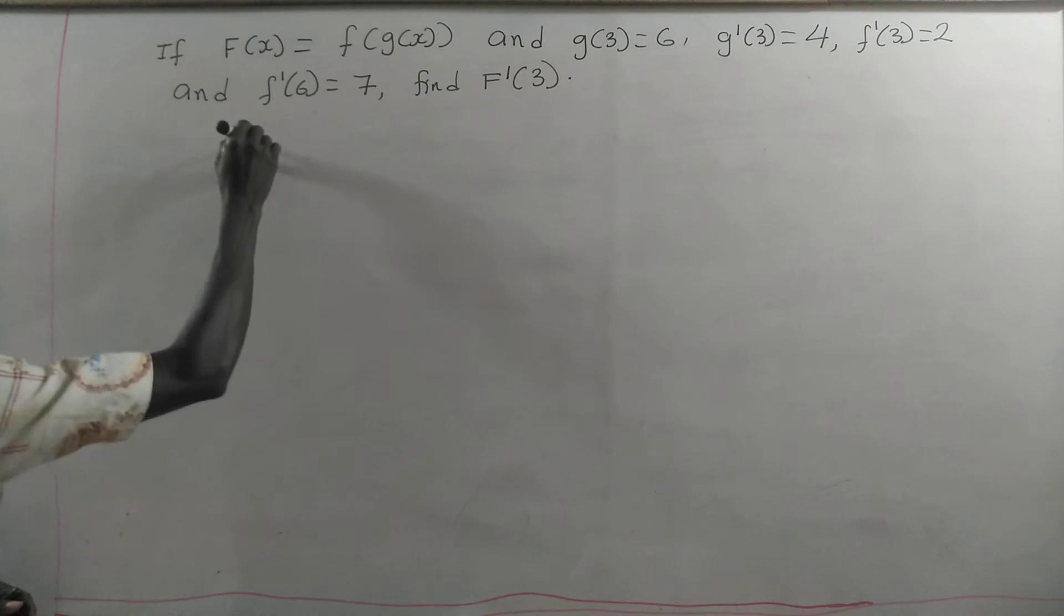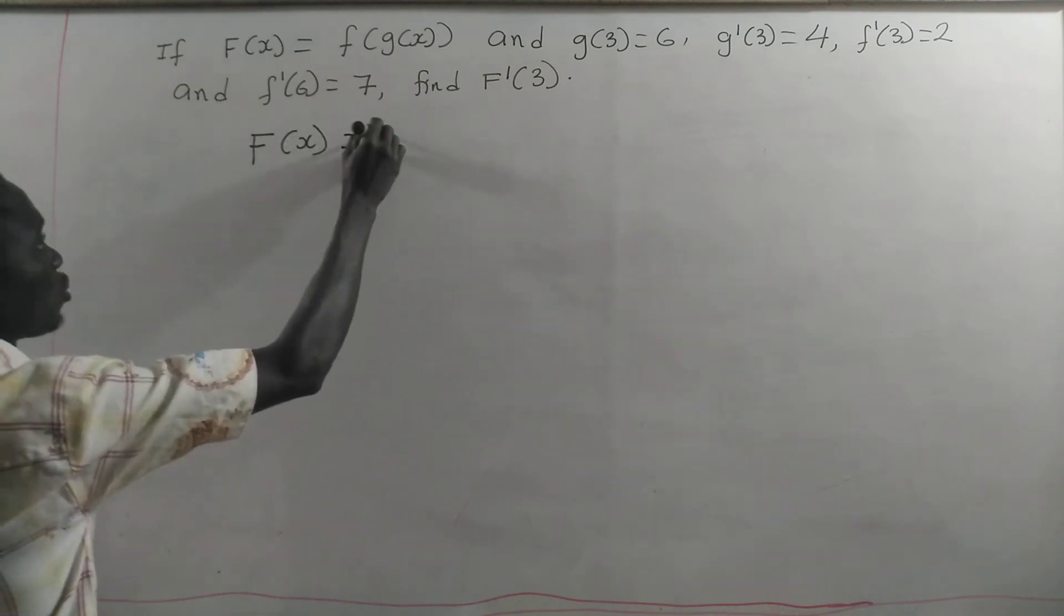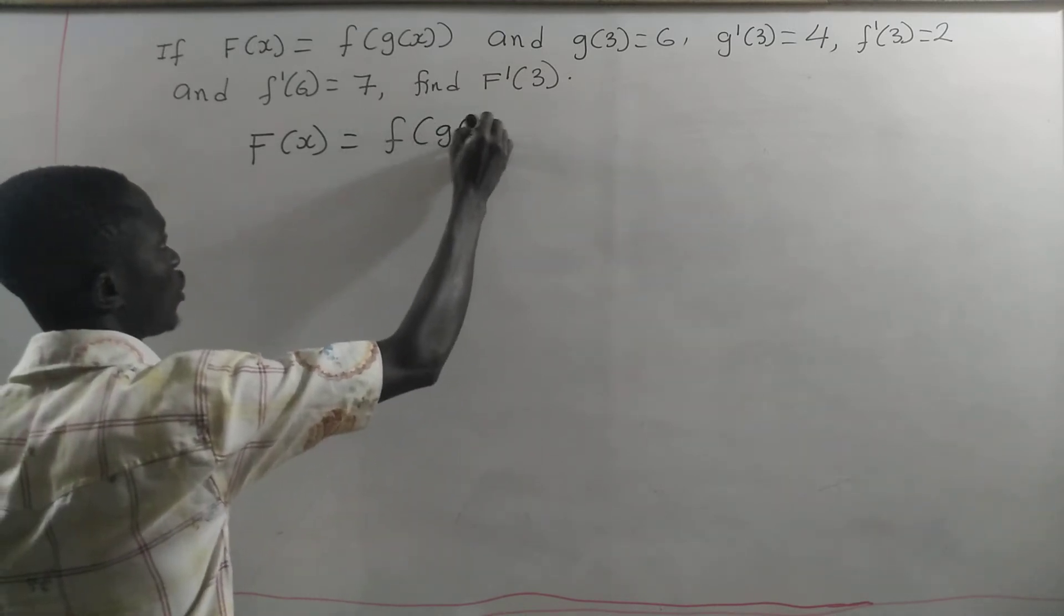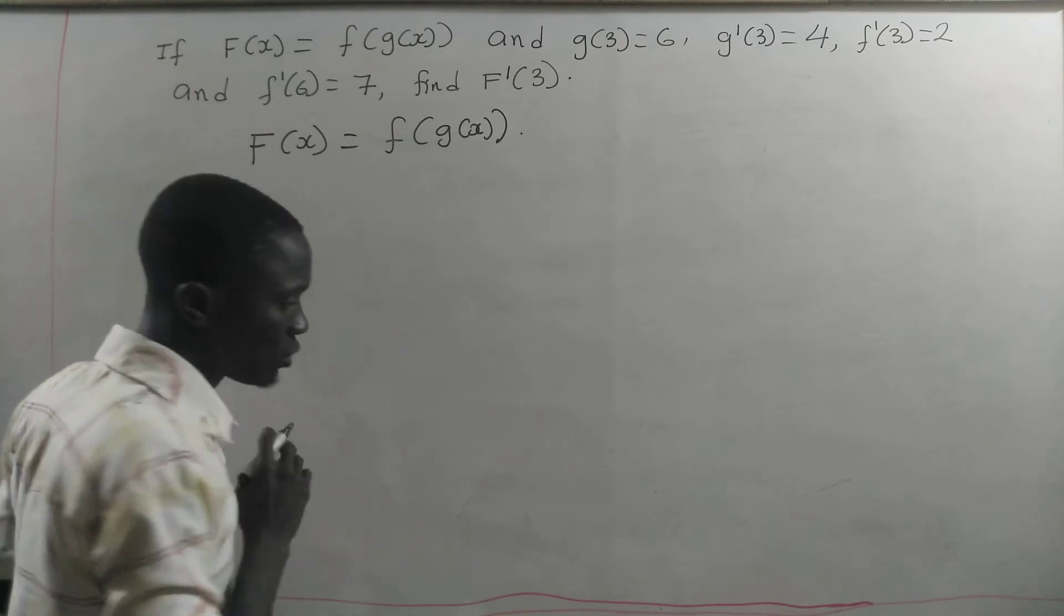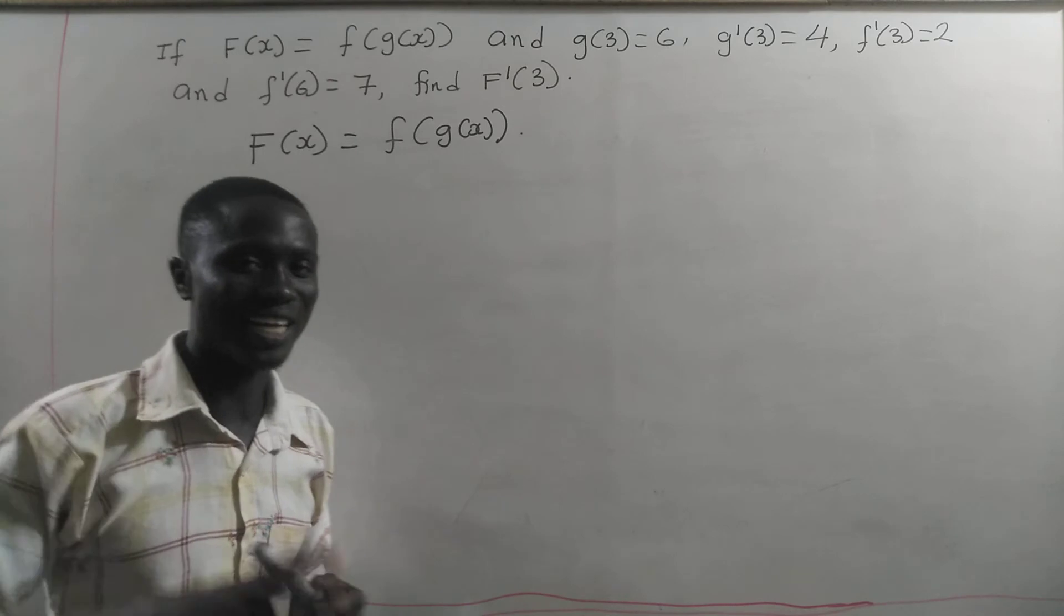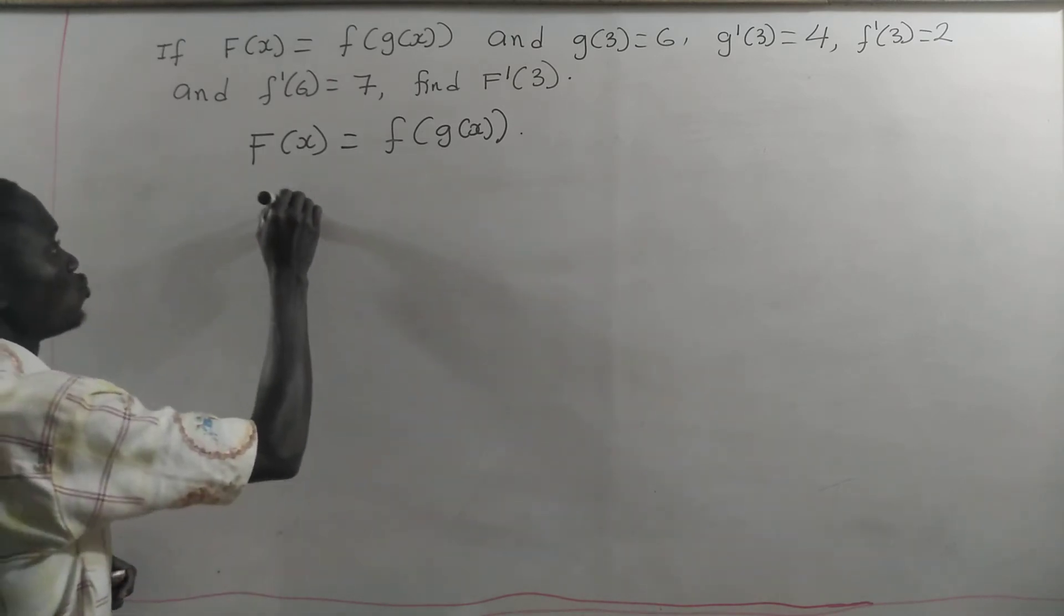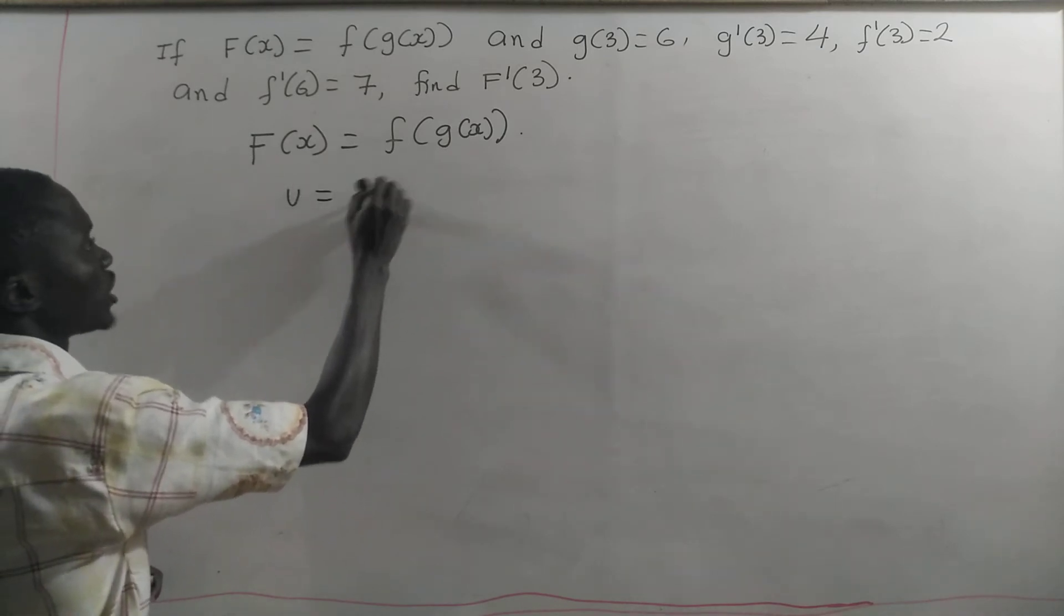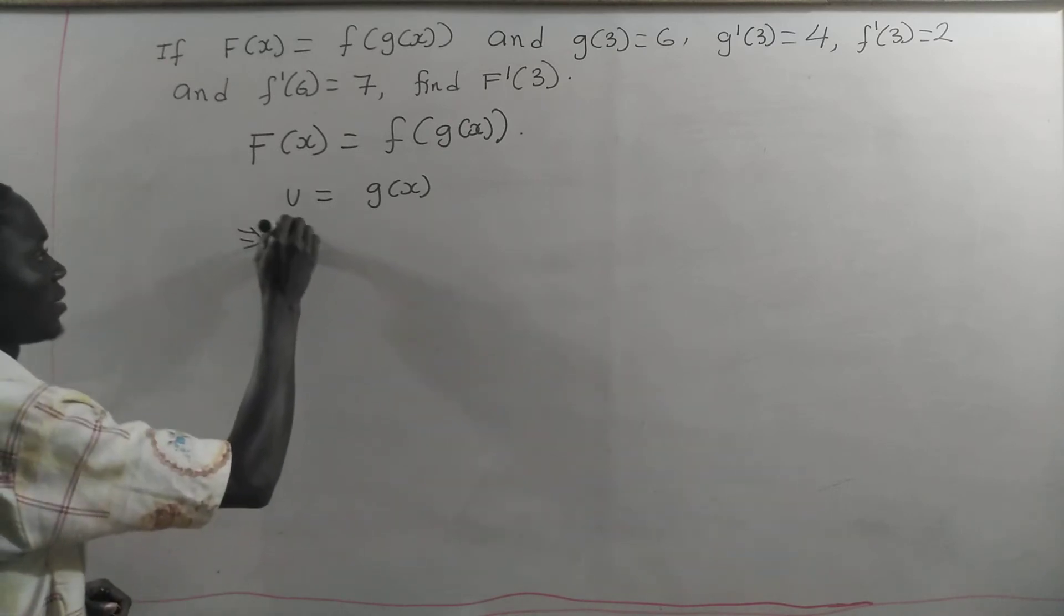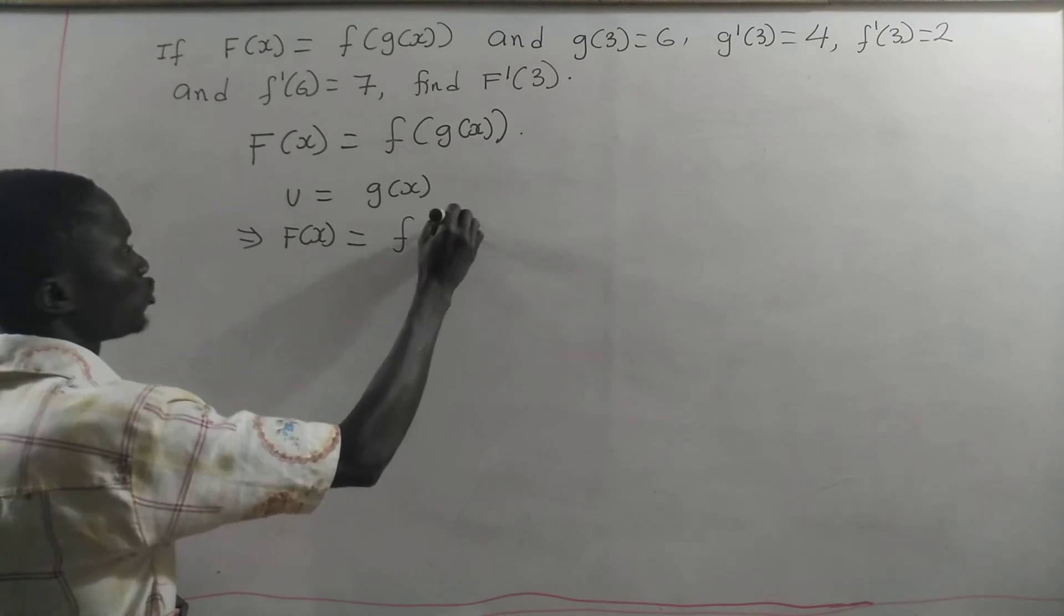We have capital F of x equals f of g of x. You see that this is a composite function, so we are going to use the chain rule and it is very simple here. For the chain rule, let's take u equal to g of x. This implies that our capital F of x is equal to small f of u.